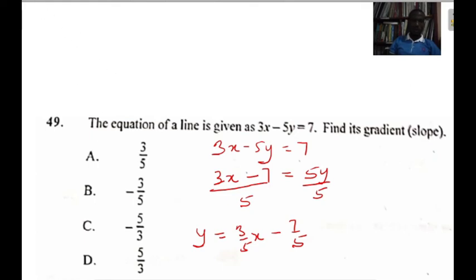From the idea of gradient, it means that this becomes the coefficient of x, which is the gradient of the line. That is just what the question is asking us to find. So it means that our answer is option A: 3 over 5 is the gradient of this line.